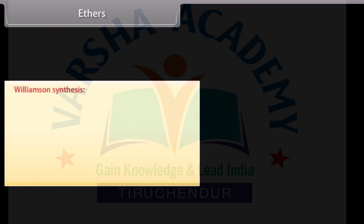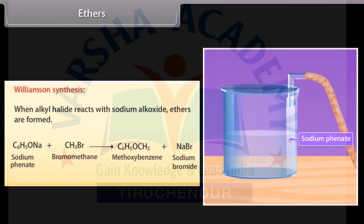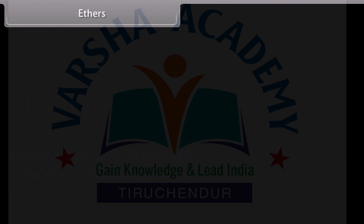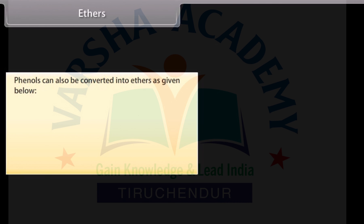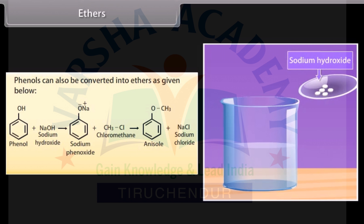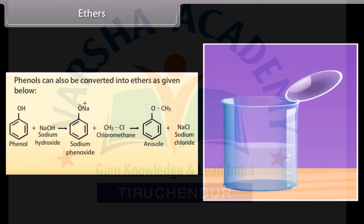Williamson synthesis: when an alkyl halide reacts with sodium alkoxide, ethers are formed. For example, bromomethane mixed with sodium phenate gives methoxybenzene and sodium bromide. Phenols can also be converted into ethers: sodium hydroxide is added to phenol to form sodium phenoxide, then on adding chloromethane, it forms anisole and sodium chloride.